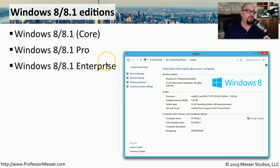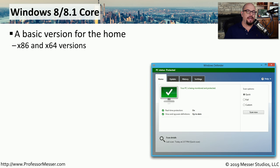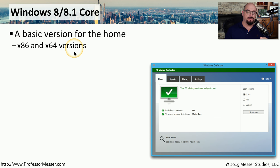There are three different editions of Windows 8 and Windows 8.1. The base edition is called the Core Edition. There's also a Pro Edition and an Enterprise Edition. Windows 8 or Windows 8.1 Core is the edition you'd find for home use.